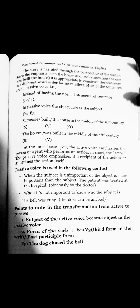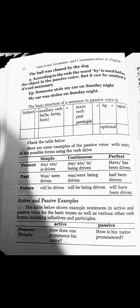For example: 'The dog chased the ball' — active. 'The ball was chased by the dog' — passive. According to the rule, the word 'by' is used before the agent in the passive voice.